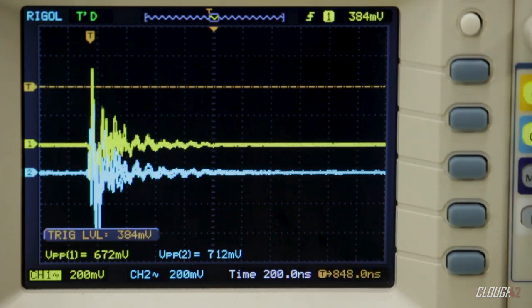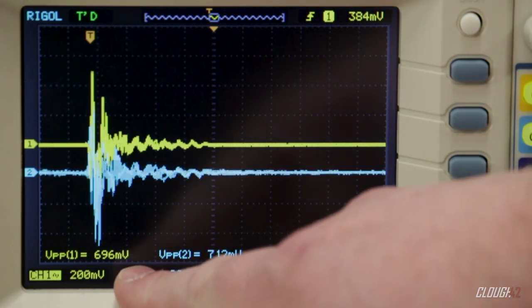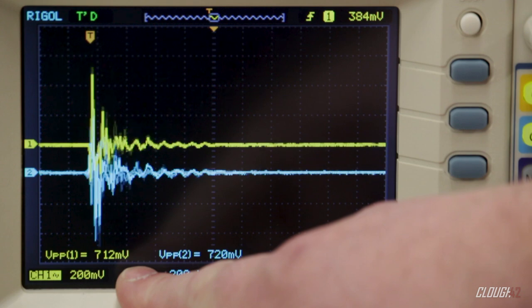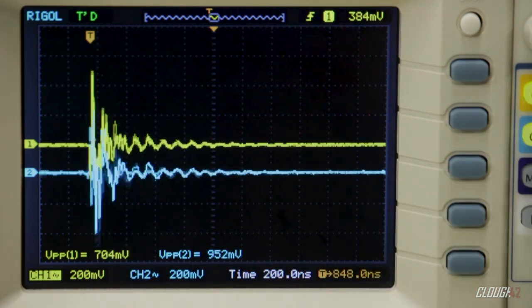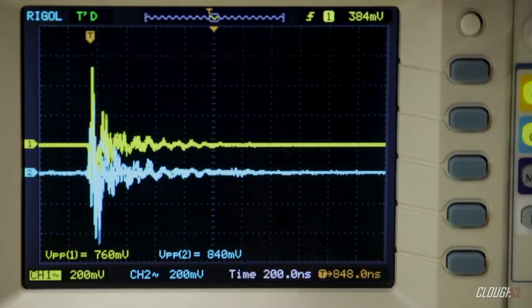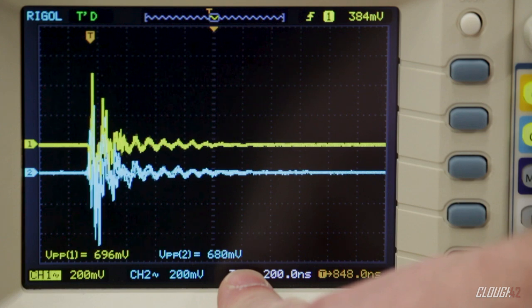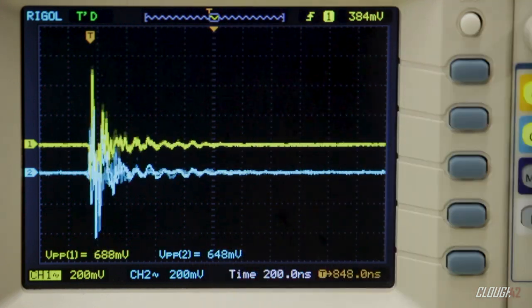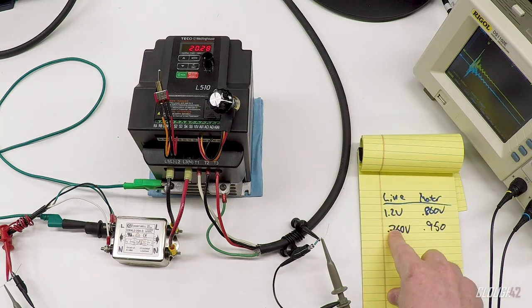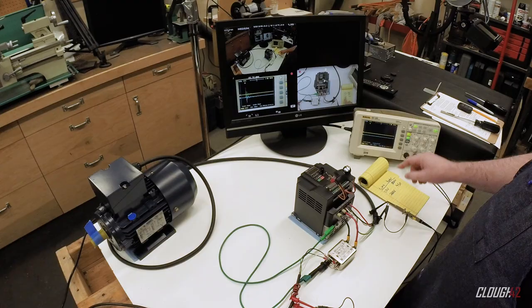It looks like the peak to peak voltage, I'm watching this on the line cord and I'm seeing I think about 760 is the highest number I've seen. And over here on the motor lead, I'm seeing maybe 900, 950 millivolts. So you can see we've cut almost in half the conducted noise going back up the line to the monitor.